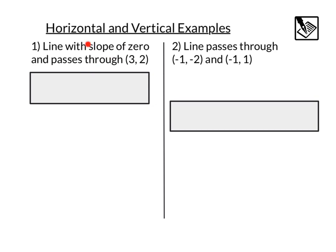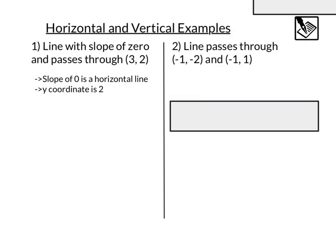And lastly, let's look at some horizontal and vertical line examples. Number one, line has a slope of 0 and passes through the point 3, 2.